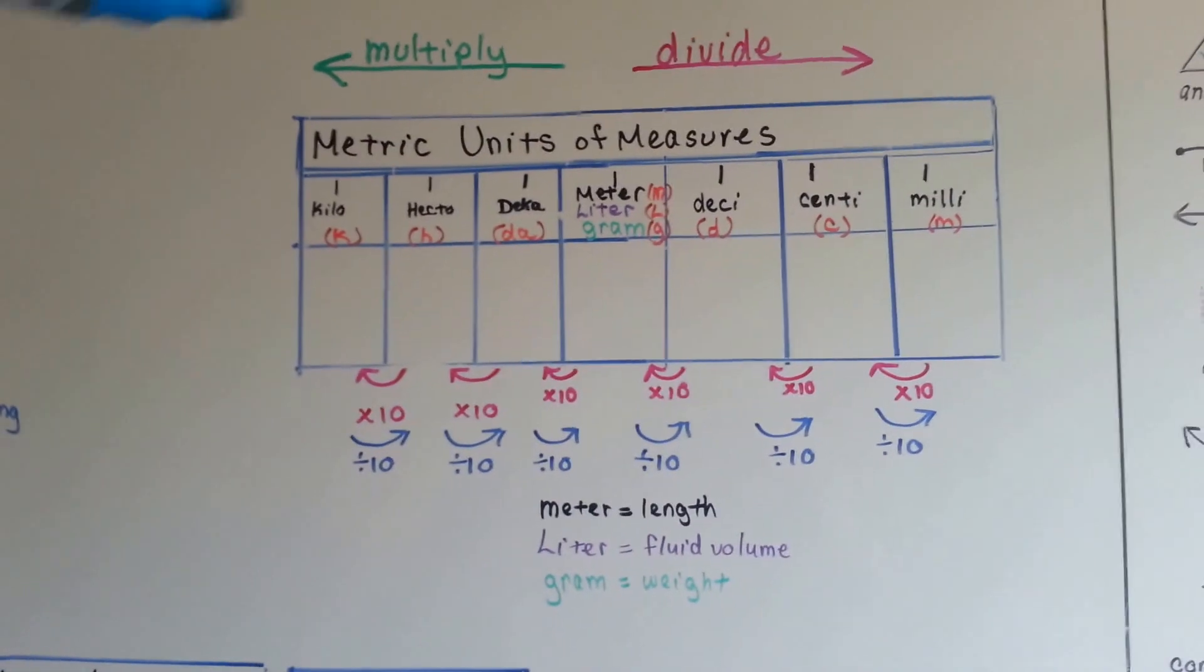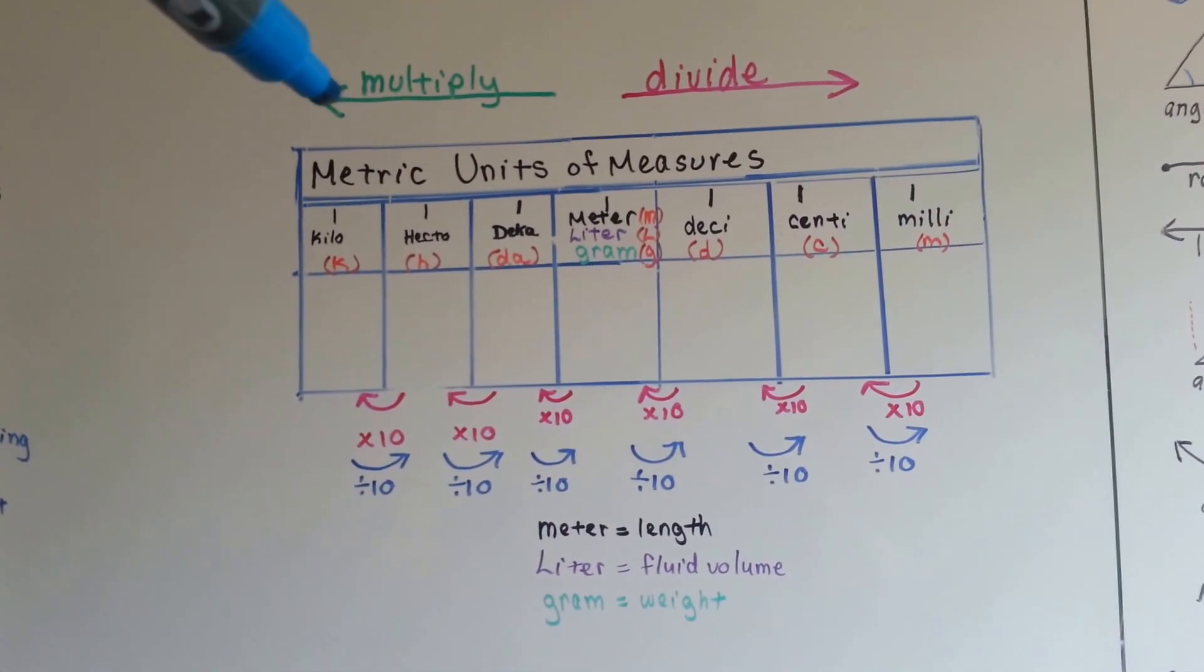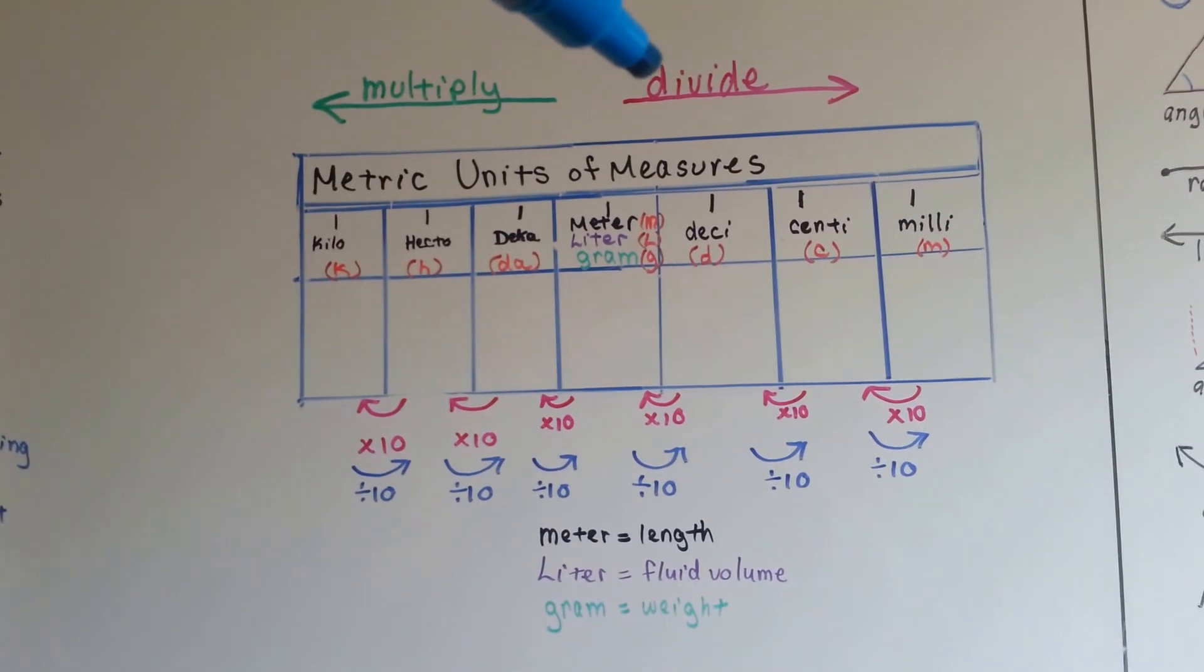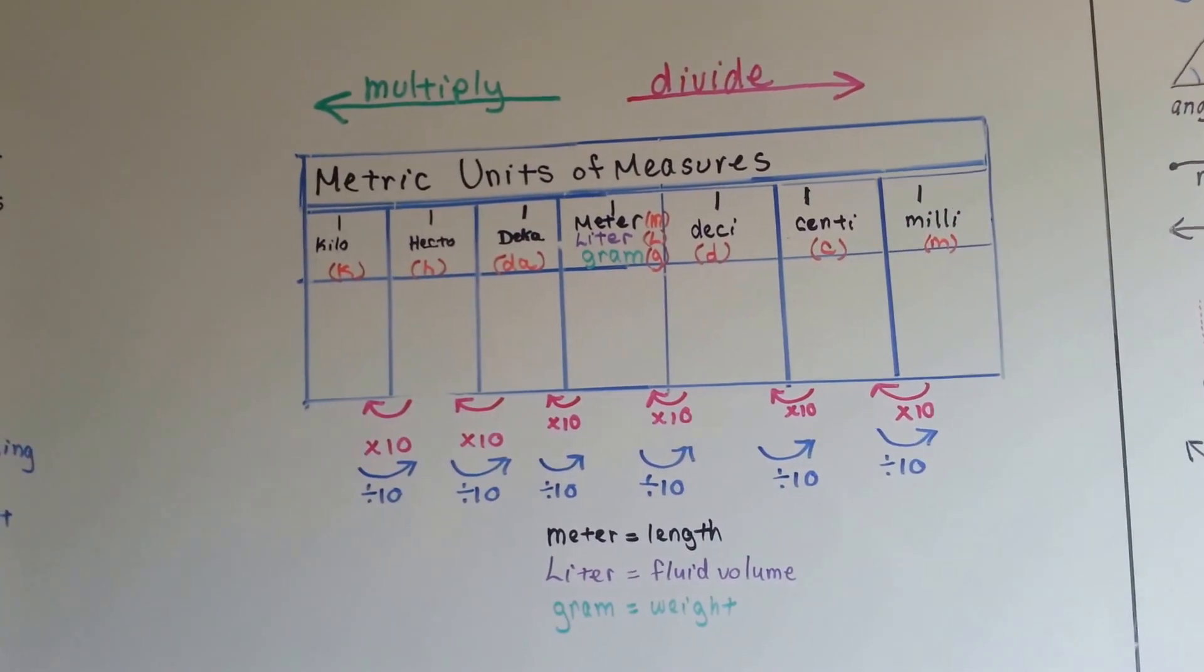To convert them, if you want to convert to a larger unit, you multiply and go this way. If you want to convert to a smaller unit, you divide and you go that way.